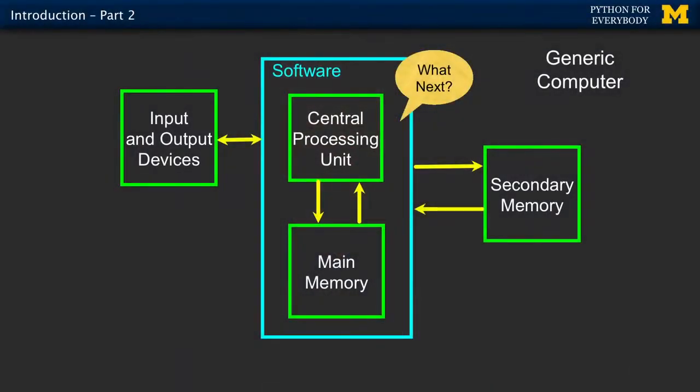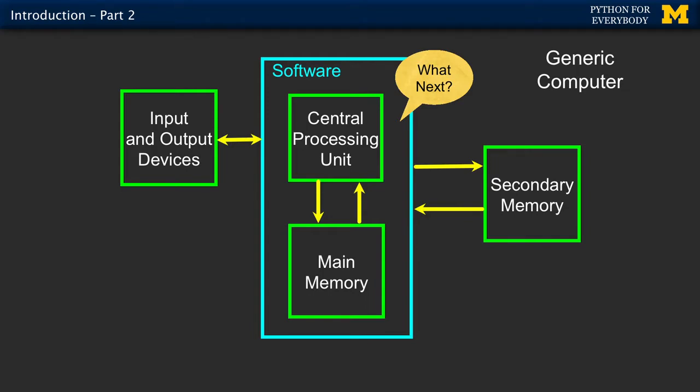The picture and the concepts I want you to understand are these terms: central processing unit, main memory, secondary memory, and input-output devices. So we'll start with input-output devices.